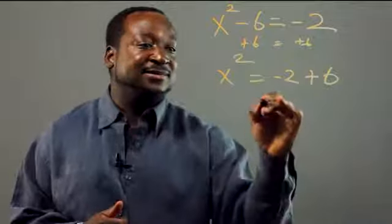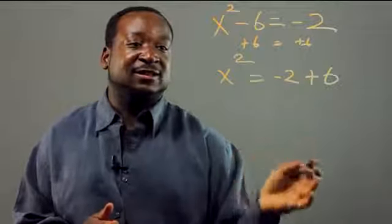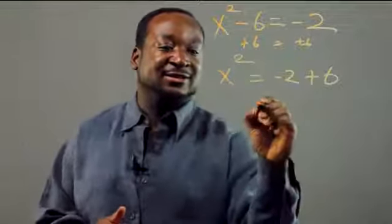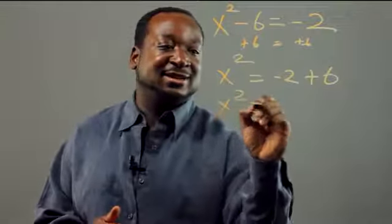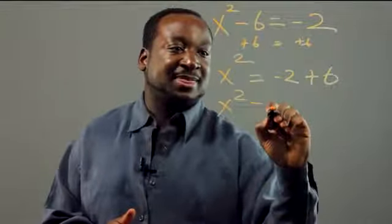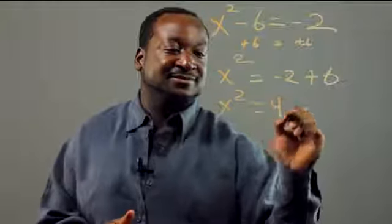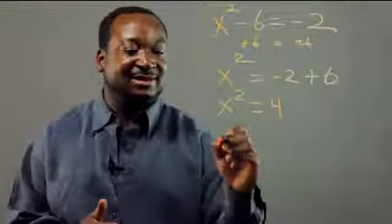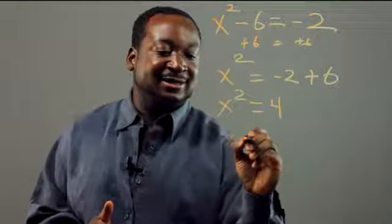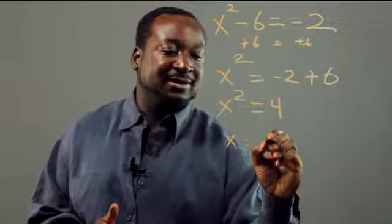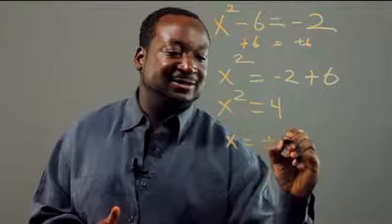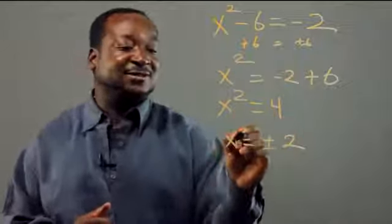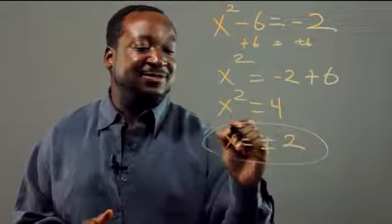And now I'm going to simplify first before I deal with the exponent. So you get x squared equals 4. And now I'm going to deal with the exponent. So x equals plus or minus 2. And now we've solved it. We have our solution.